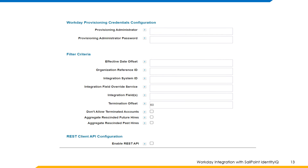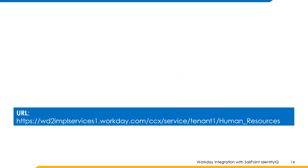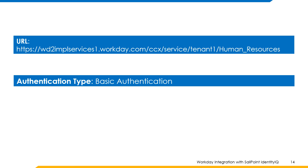Aggregate rescinded past hires: retain the information for rescinded past hires to support leaver workflows. Enable REST API: REST API credentials would be used to update the custom attributes. Here is the format for the Workday URL, where tenant one in the URL is the Workday tenant name. Note that the Workday connector only supports the human resource module of Workday, and authentication type is basic authentication.